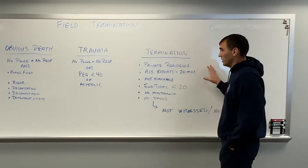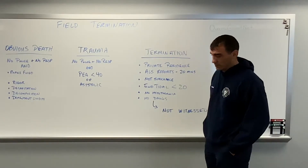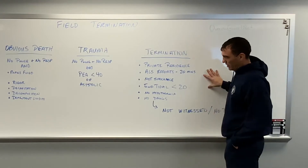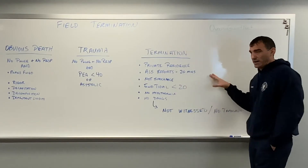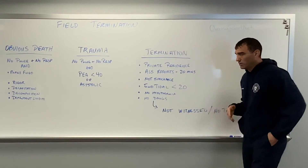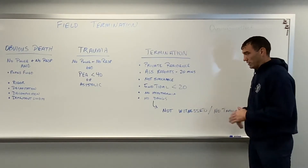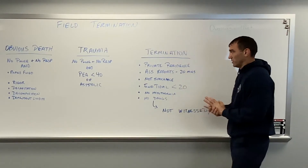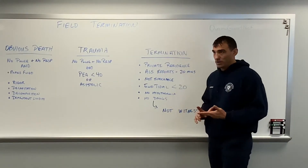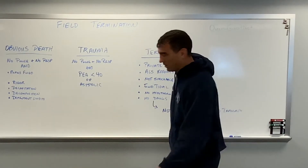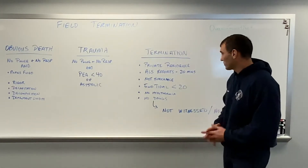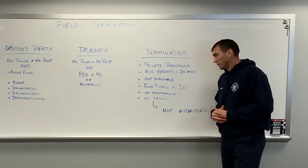Once we've started CPR and are working the patient, we get into terminating somebody on scene. There's a little acronym for this: 'Do Not Go But Break' — we can break this down to exactly what has to happen. Starting out, the first thing is that any patient that's terminated has to be in a private residence. Private residence can include their home, and also a nursing home if the person is living there on a permanent basis — that is their residence.